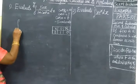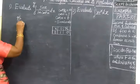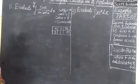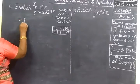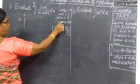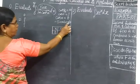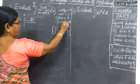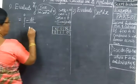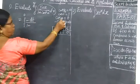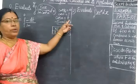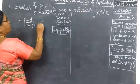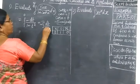Now substitute: the integral from 1 to 0. For sin x dx, we substitute minus dt. For 1 plus cos x, cos x becomes t, so it becomes 1 plus t squared. The integral becomes minus dt divided by (1 plus t squared), with limits 1 to 0.